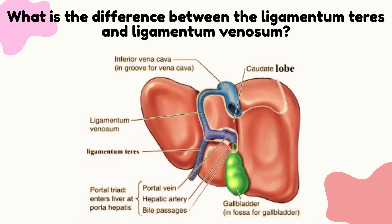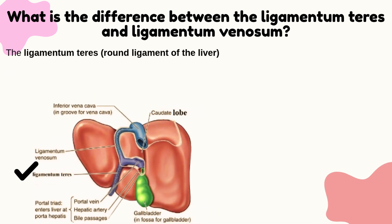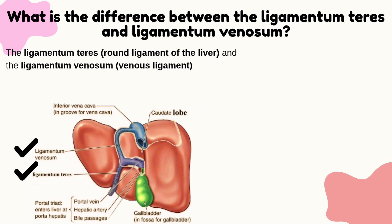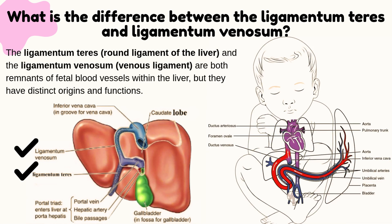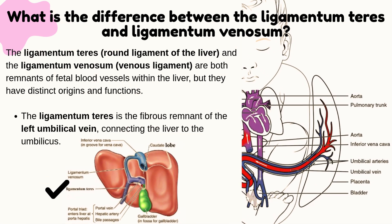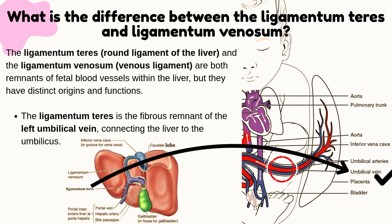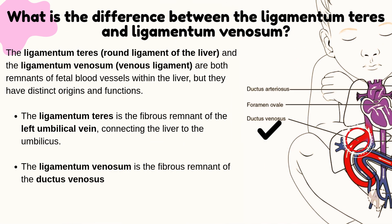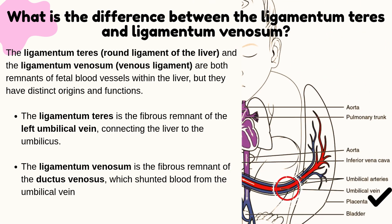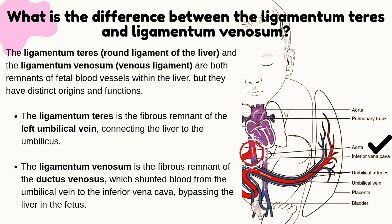Regarding the difference between the Ligamentum Teres and Ligamentum Venosum: the Ligamentum Teres, or round ligament of the liver, and the Ligamentum Venosum, or venous ligament, are both remnants of fetal blood vessels within the liver, but they have distinct origins and functions. The Ligamentum Teres is the fibrous remnant of the left umbilical vein, connecting the liver to the umbilicus. The Ligamentum Venosum is the fibrous remnant of the ductus venosus, which shunted blood from the umbilical vein to the inferior vena cava, bypassing the liver in the fetus.